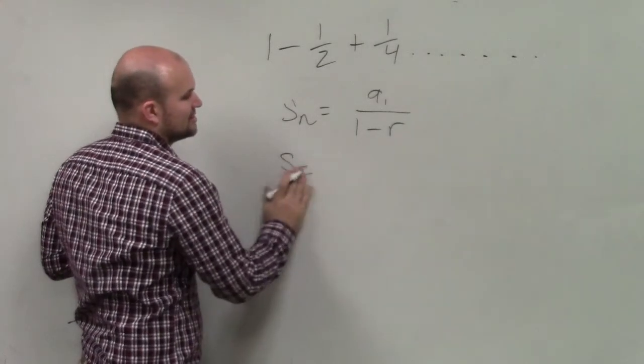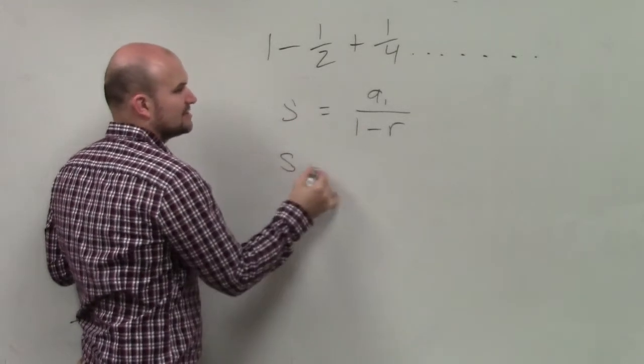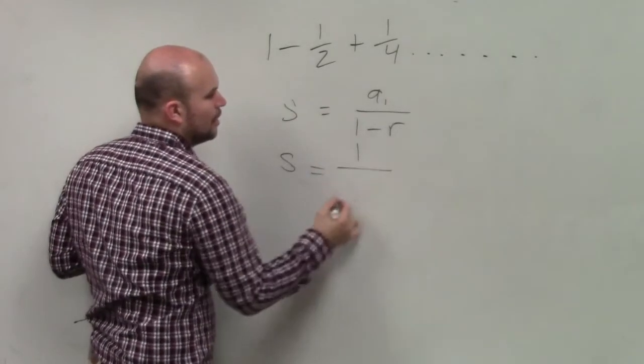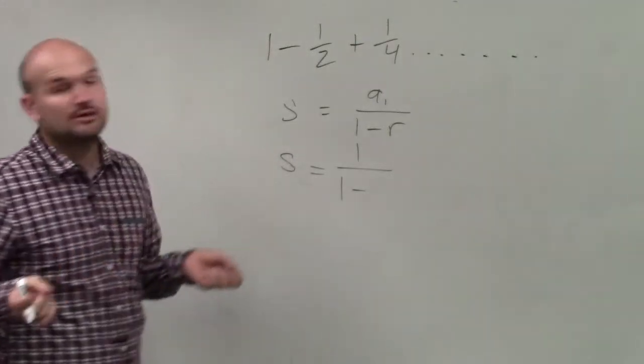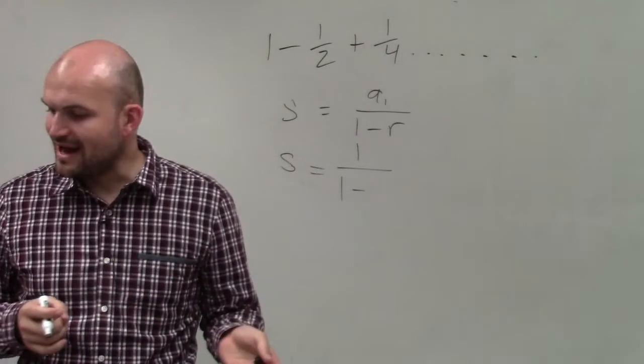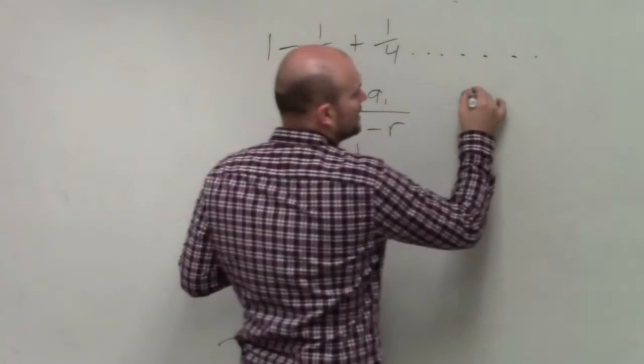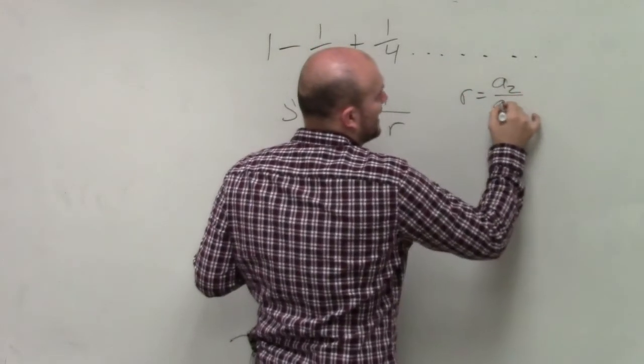So S is just a sub 1 over 1 minus r. It's not S of n, just S is going to be a sub 1 over 1 minus r. Now we need to determine r. Now remember, to find r, r is simply a2 divided by a1.